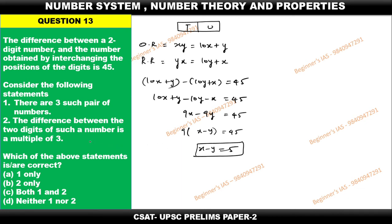Now go with the statements. The difference between the two digits of the number is multiple of 3, but here it is 5. 5 is not a multiple of 3. Therefore we can eliminate statement number 2, therefore eliminate option B and then C also.